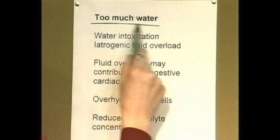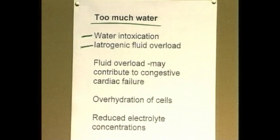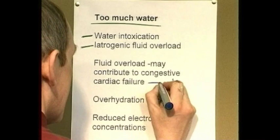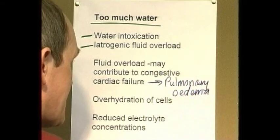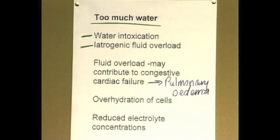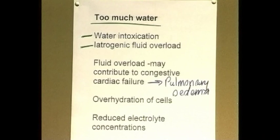Too much water can be caused by excessive drinking or overzealous administration of intravenous fluids. Fluid overload can contribute to acute congestive cardiac failure, and the first sign is pulmonary oedema — the patient will be short of breath, which is also apparent on chest X-ray. There may also be over-hydration of cells and a reduced concentration of electrolytes. Prevent psychiatric patients from drinking too much, monitor fluid given to patients, and if able to monitor central venous pressure, fluid overload should not occur.